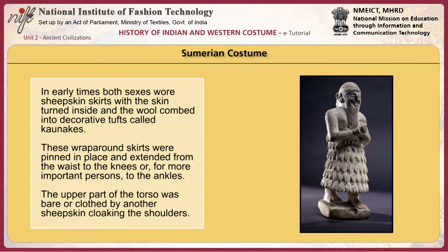In early times, both sexes wore sheepskin skirts, with the skin turned inside and the wool combed into decorative tufts called kaunakes. These wrap-around skirts were pinned in place and extended from the waist to the knees, or, for more important persons, to the ankles. The upper part of the torso was bare or clothed by another sheepskin cloaking the shoulders.